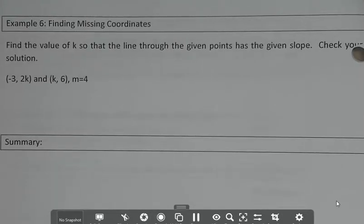Example 6. We're going to find the value of k so that the line through the given points has the given slope and check your solution.